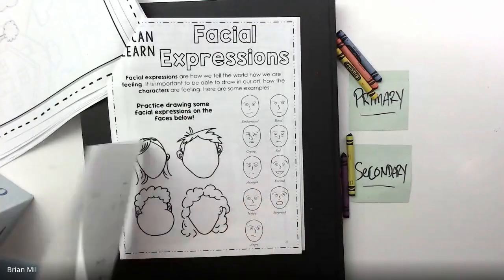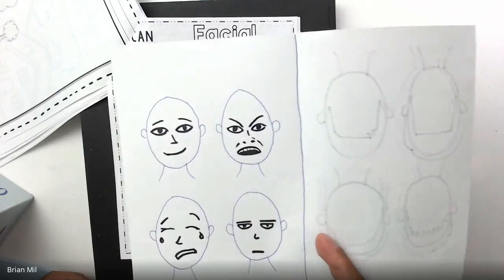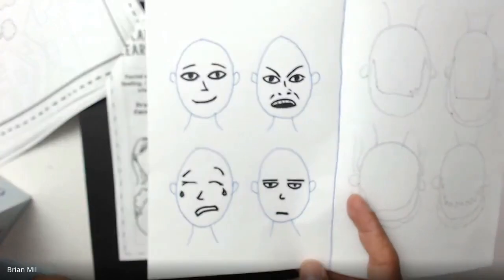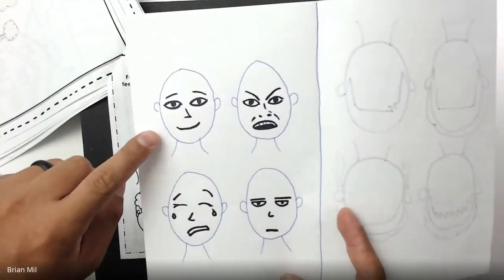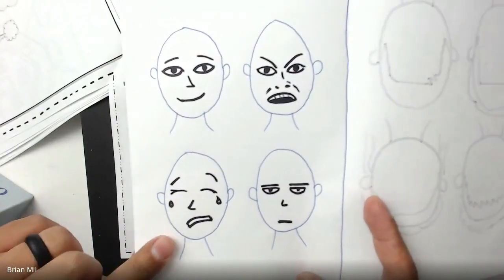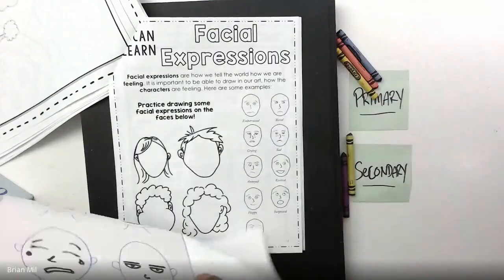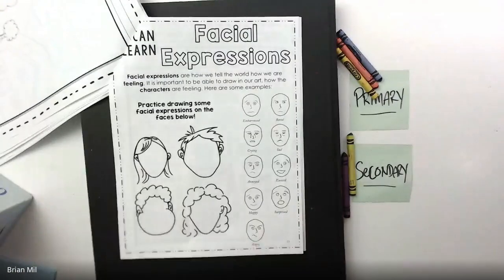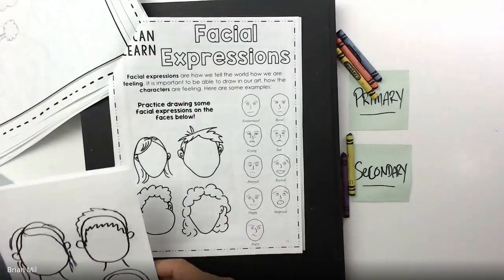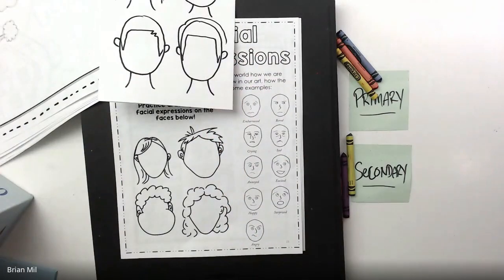That's what we're going to do right now. Over here I actually did an example already. You guys want to see this? I did this last class. They look kind of weird, I know. The first one I did was happy, the next one I did was angry, the next one I did was crying, and the next one I did was bored. I did that last class, but for you guys I want you to do it in your workbook or a blank sheet of paper.